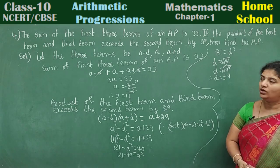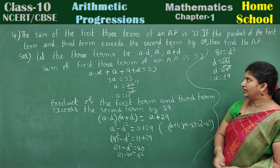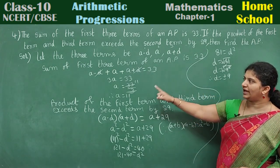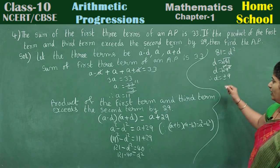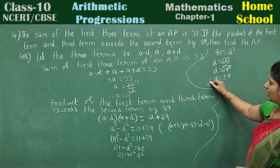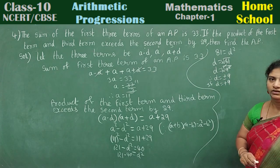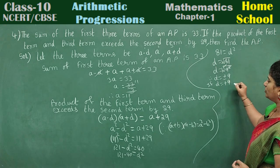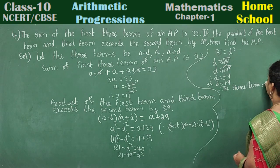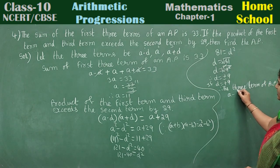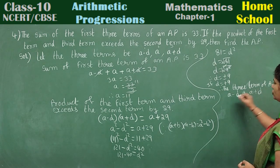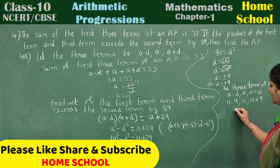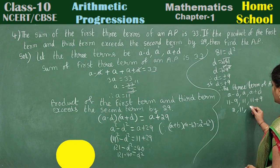We got A and D values. If we know A and D we can find any term. Here, just substitute A and D values in the given three terms. D has two values — if D is equal to plus 9, therefore the three terms of the AP are: A minus D = 11 minus 9 = 2, A = 11, A plus D = 11 plus 9 = 20.